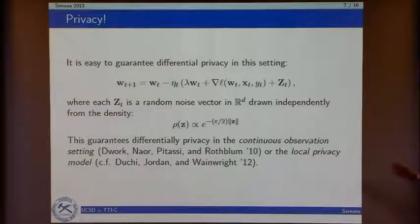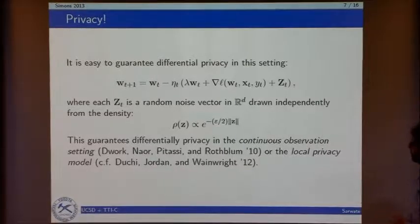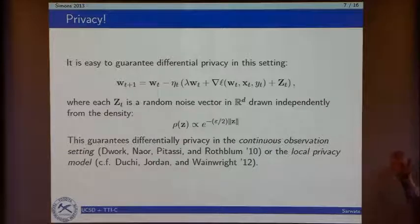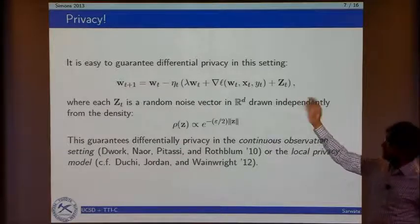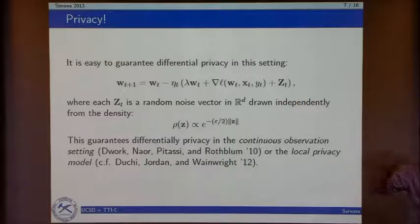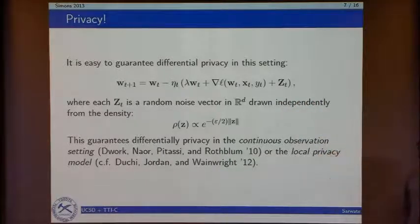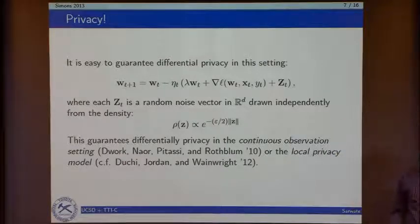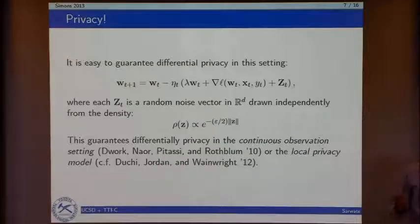This guarantees differential privacy in the continuous observation setting, and more recently also satisfies a local privacy model — slightly different notions. In the continuous observation model, I can actually publish the iterates as I go along the whole path. In the local privacy model, I go to the data holder who holds data z and say 'please compute a gradient,' and they give me a noisy gradient instead.